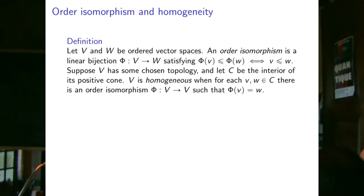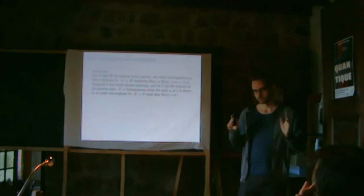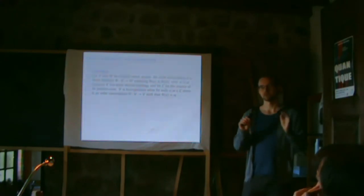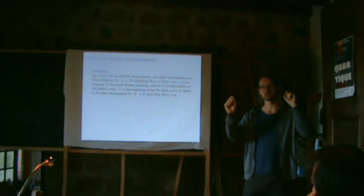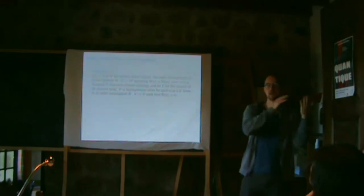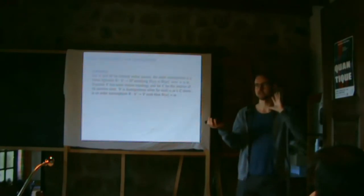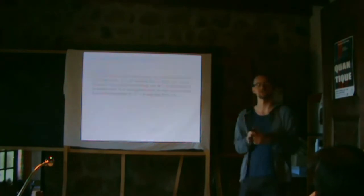With a topology, we can take the interior of the positive cone. We say the cone is homogeneous when for every two elements in the interior of the positive cone, we can find an order isomorphism mapping one to the other. This means that any two elements in the interior are equivalent from an order-theoretic perspective — the space is maximally symmetric in this sense.